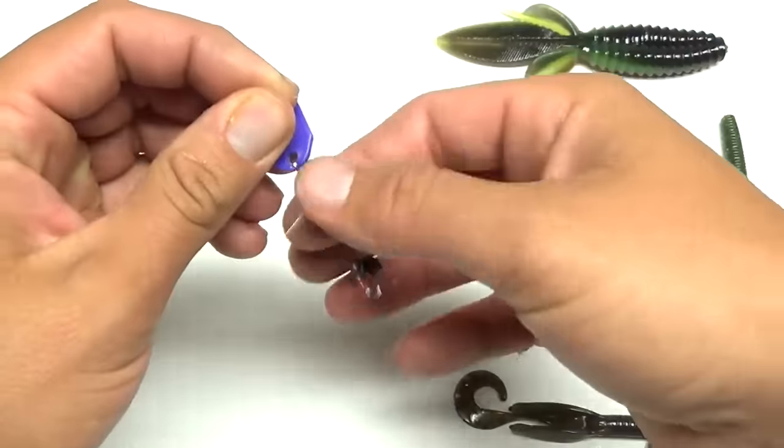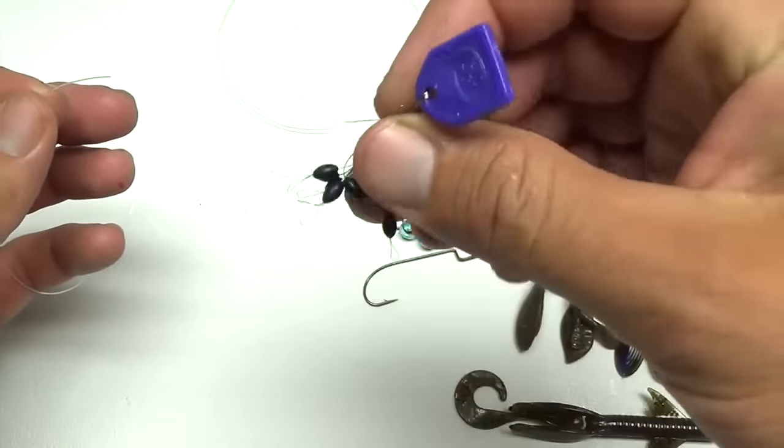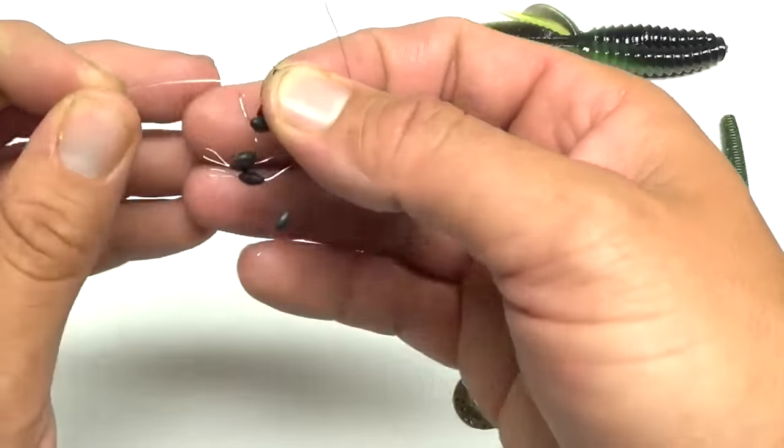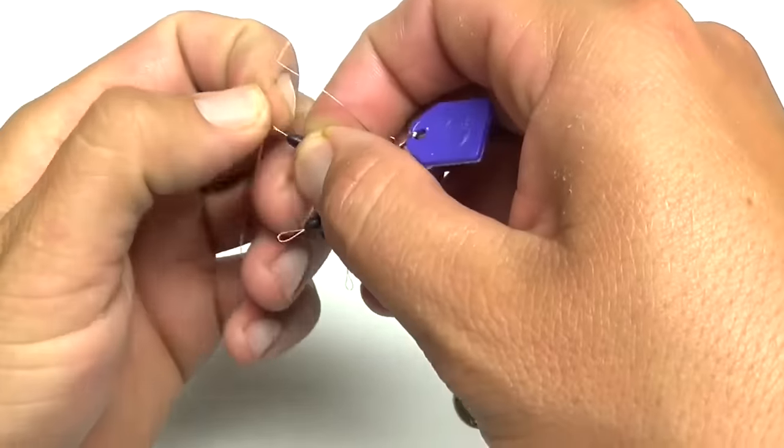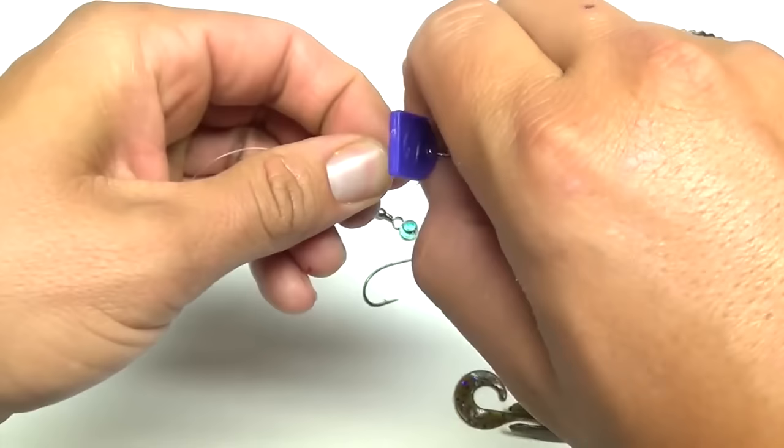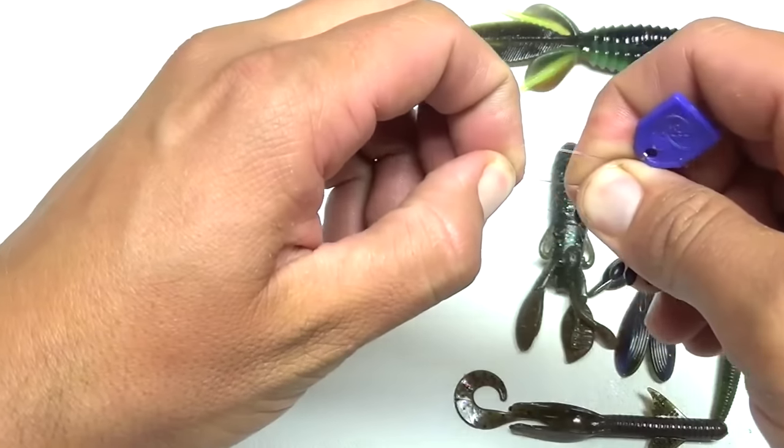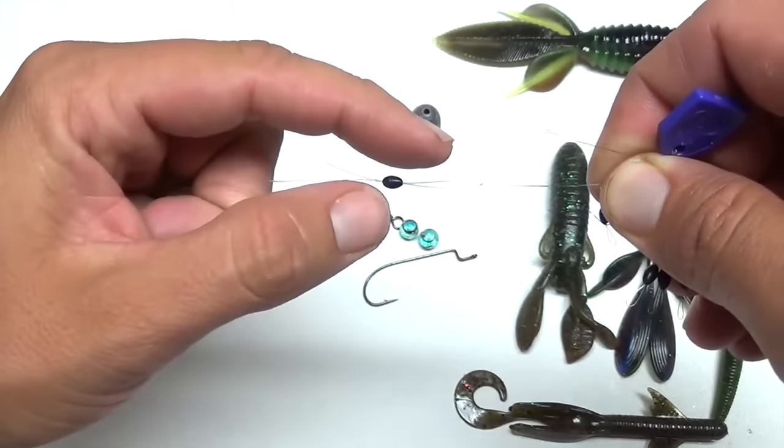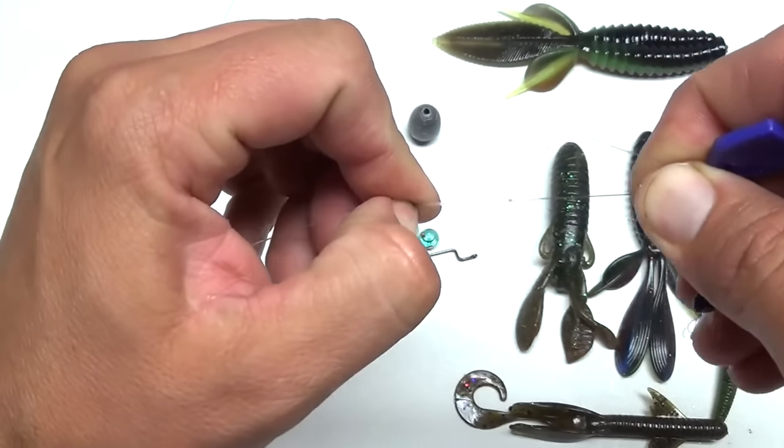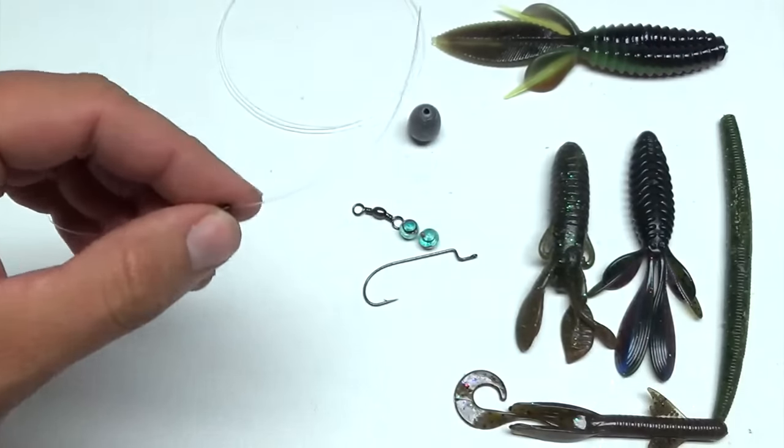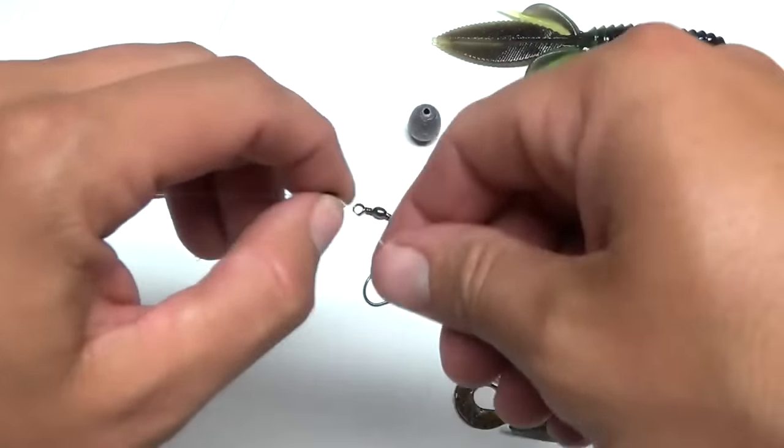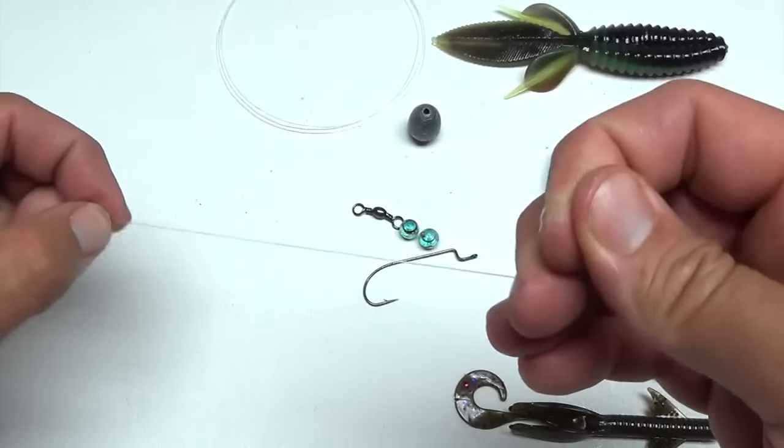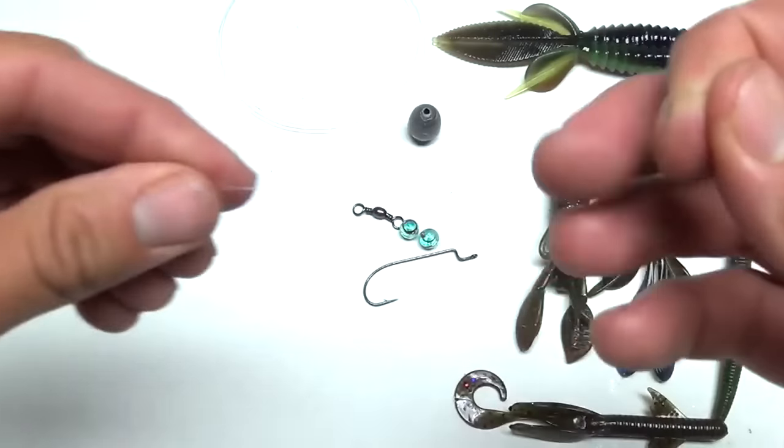I'll take one of these little rubber bobber stoppers and I'll put one on my line here. The reason I do that, I'll show you here in a minute, but the reason I do it is to protect the knot we're going to make, because those beads and that weight hitting against your knot a lot of times can damage your knot and damage your line right above your knot, causing your line to break. So I think this rubber bobber stop helps out a lot. So I'll just move that up the line.